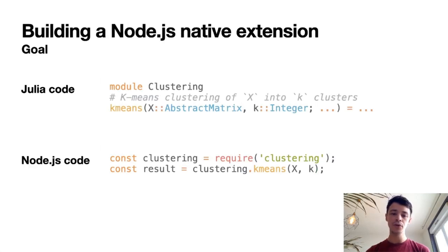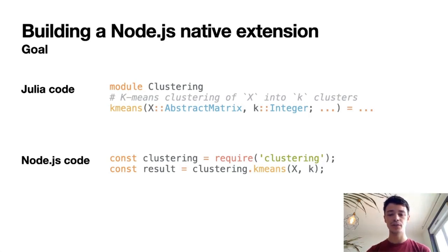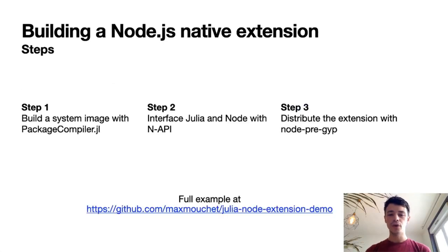The goal is to have some code written in Julia — for example, the k-means function from the clustering.jl package, which performs k-means clustering of a dataset — and to call this function from a Node.js application written in JavaScript. To achieve that, there are three steps: first, build a system image with PackageCompiler.jl; second, interface the Julia and Node runtimes with the Node extension API; and third, distribute the extension.